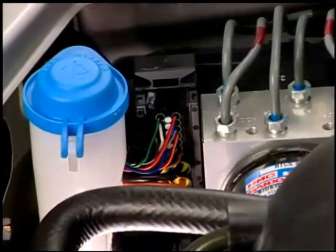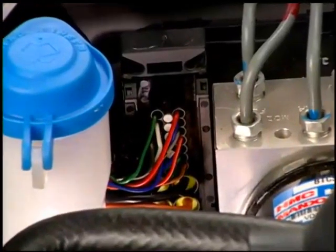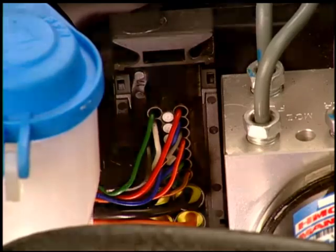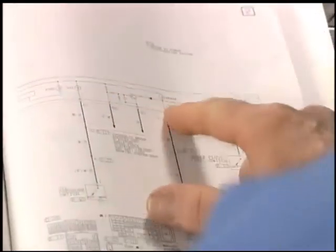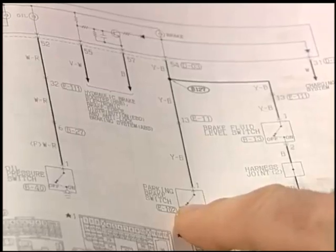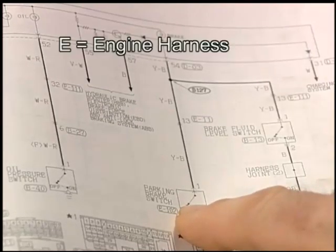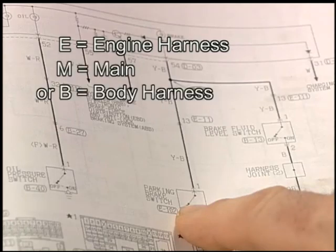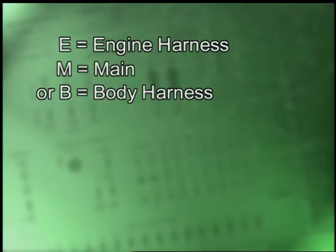Connectors, as the name implies, connect loads in a circuit to the wires that supply power and ground. Connectors are usually numbered in a wiring harness. The number typically uses a letter to distinguish the harness or group of wires the connector is located in, followed by the number for that specific connector. The typical harness designations are E for engine harness and M or B for main or body harness.